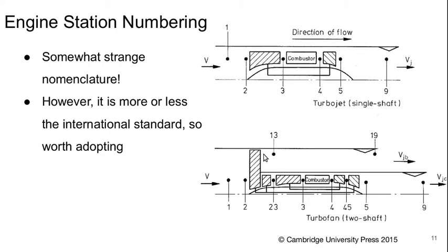We use two-digit numbers to represent what's going on in the bypass stream and basically just add a one in front of the equivalent stations from the core. So after all the compression is done in the bypass, after the fan, that would have been station 3 in the turbojet and it's station 3 here as well. So in the bypass, that's station 13. And at the exit we have station 9, so for the bypass that's station 19.